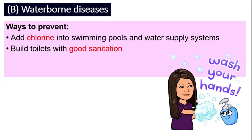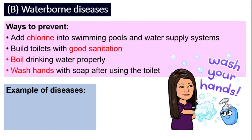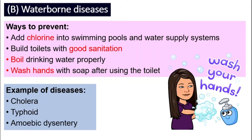We also need to build toilets with good sanitation and keep them clean, and boil drinking water properly to kill microorganisms. We need to wash our hands frequently with soap, especially after using the toilet. Some diseases spread through water are cholera, typhoid, and also amoebic dysentery.